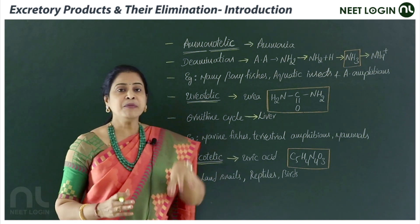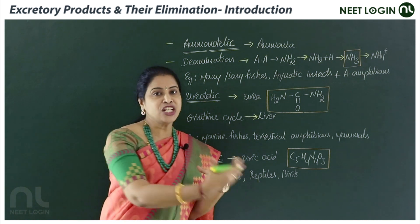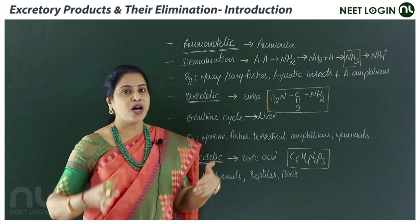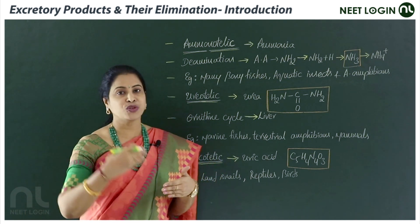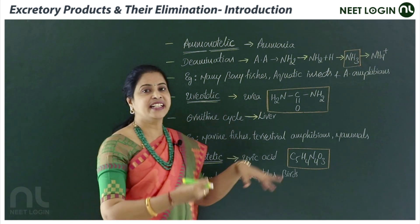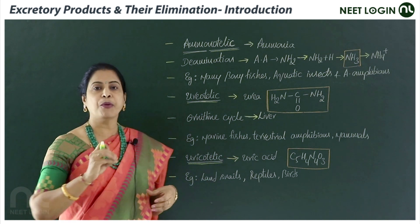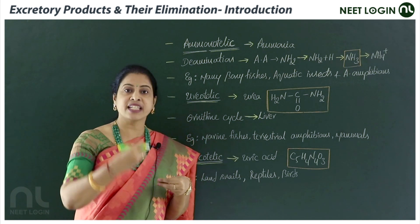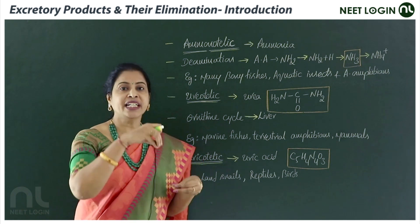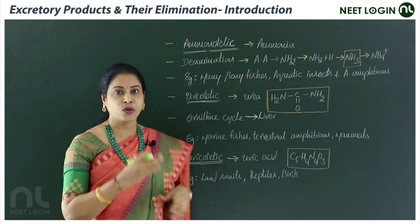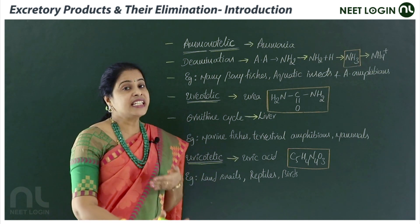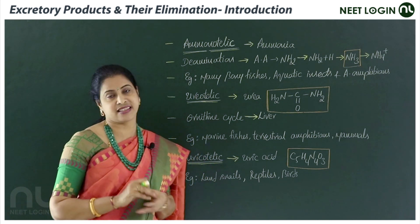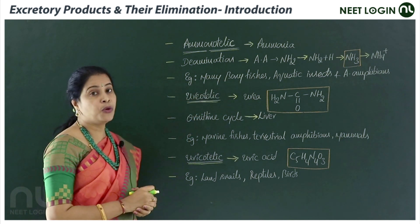In aquatic animals like fishes, the kidneys have a very limited role in eliminating nitrogenous waste, because ammonia is easily soluble in water. The majority of ammonia is diffused through the gills and body surface, and is excreted in the form of ammonium ions. Ammonia is highly toxic, so it is eliminated in a diluted state to lessen its toxicity. More water is eliminated along with ammonia, and the energy required for its formation is less.